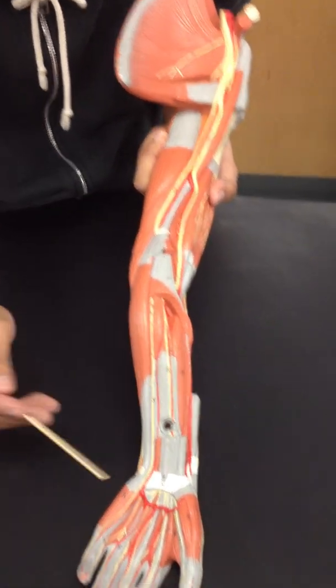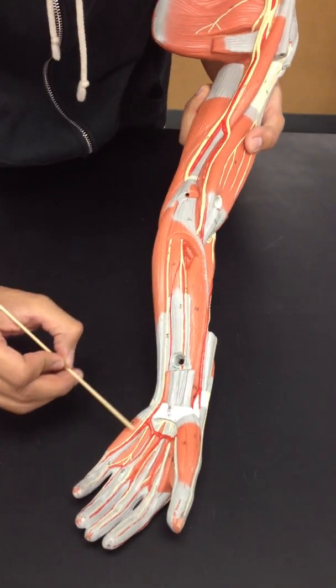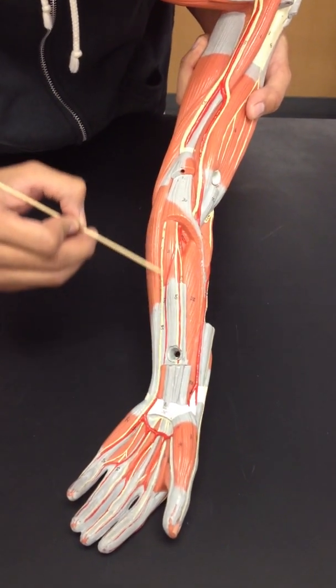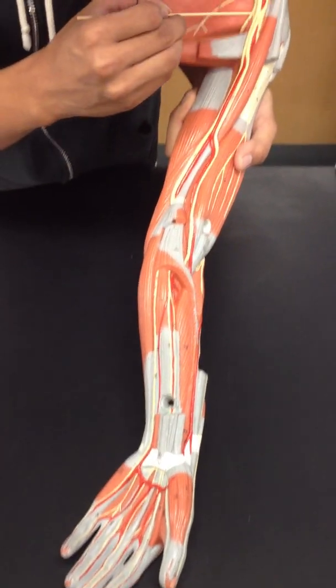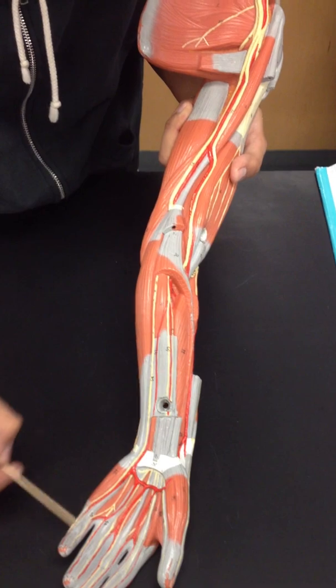It's going to be on the pinky side. So that's going to be number 58, this yellow line right here, going up all the way from here. That's the ulnar nerve, the pinky.